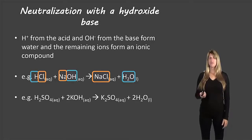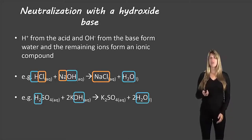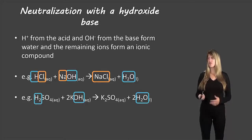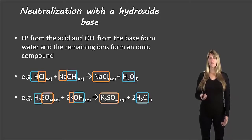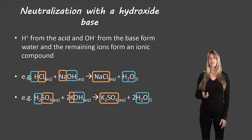Here's another example using a different type of acid — an oxo acid. The H⁺ from the oxo acid and the OH⁻ from potassium hydroxide form water, and that leaves the K⁺ from the potassium hydroxide and the sulfate from the sulfuric acid, which come together to form potassium sulfate.